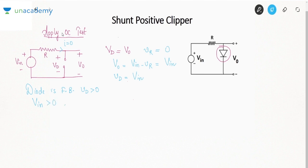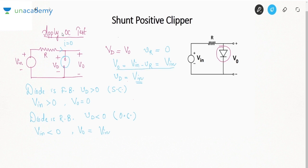The diode is forward biased when diode voltage is positive, meaning V_in is greater than zero. In that case, if the diode is forward biased it is treated as short circuit, and V_out becomes zero. The diode is reverse biased when diode voltage is negative, meaning V_in is negative. In that case the diode is open, and since there is no current, V_out equals V_in.